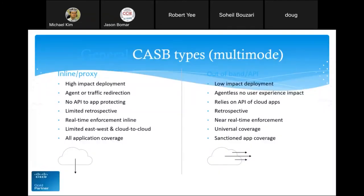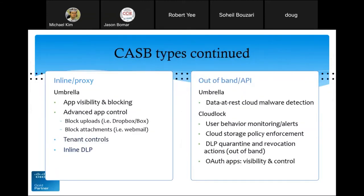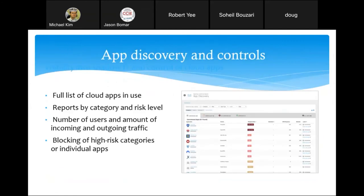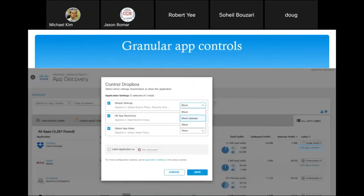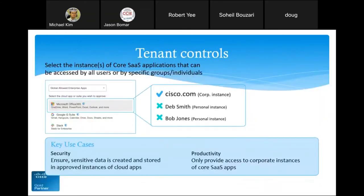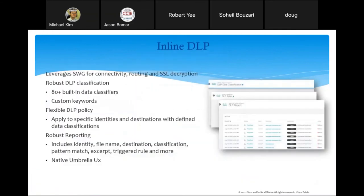CASB — Cloud Access Security Broker — is generally used for data loss prevention to prevent data from leaking out of your network, and for protection of your cloud applications. This is part of the cloud-delivered firewall functions that Cisco Umbrella now has. Many of these features including tenant controls are fairly standard CASB and data loss prevention capabilities.